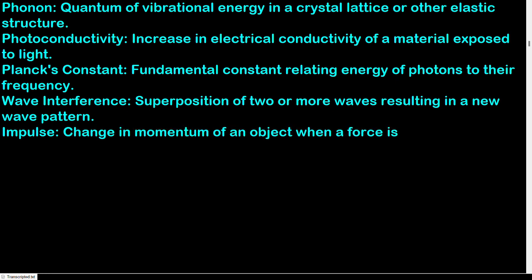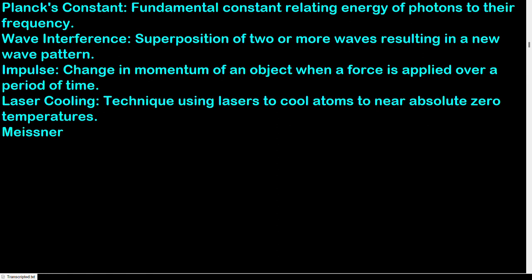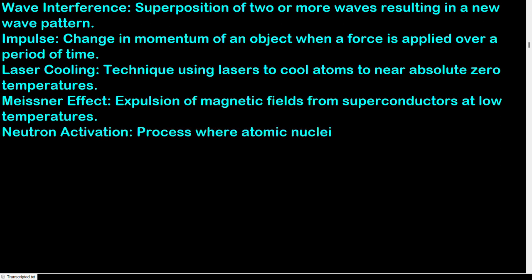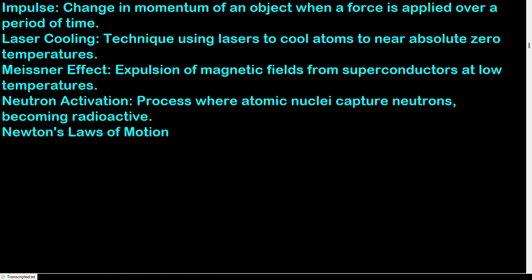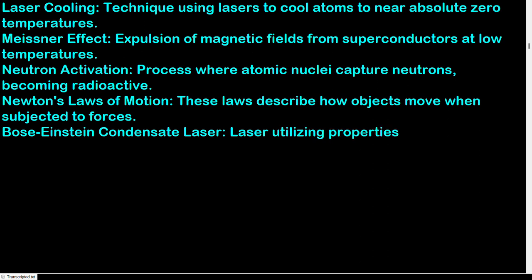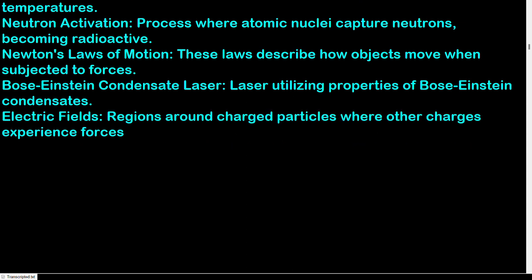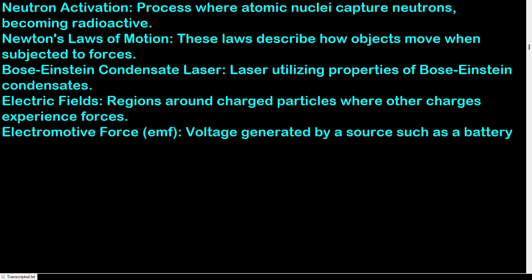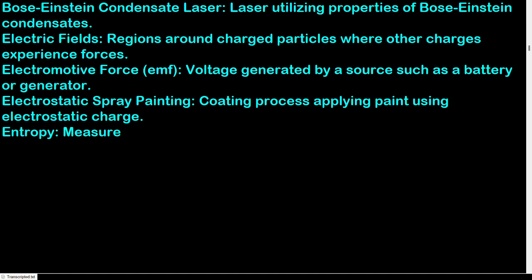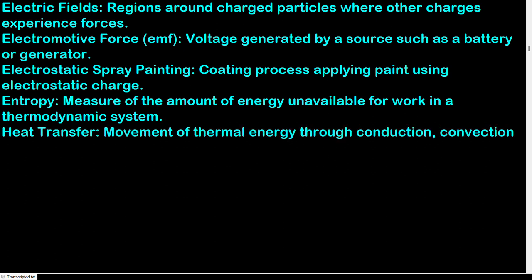Impulse: change in momentum of an object when a force is applied over a period of time. Laser cooling: technique using lasers to cool atoms to near absolute zero temperatures. Meissner effect: expulsion of magnetic fields from superconductors at low temperatures. Neutron activation: process where atomic nuclei capture neutrons, becoming radioactive. Newton's laws of motion: laws describing how objects move when subjected to forces. Bose-Einstein condensate laser: laser utilizing properties of Bose-Einstein condensates. Electromotive force: voltage generated by a source such as a battery or generator. Electrostatic spray painting: coating process applying paint using electrostatic charge. Entropy: measure of the amount of energy unavailable for work in a thermodynamic system.